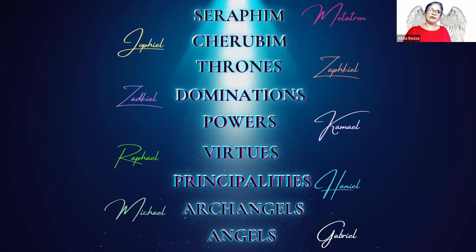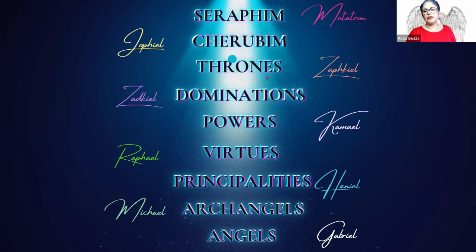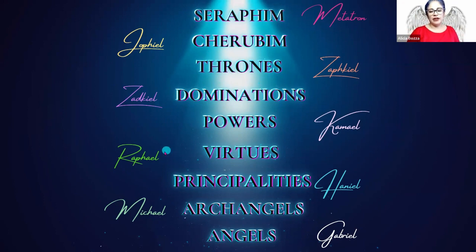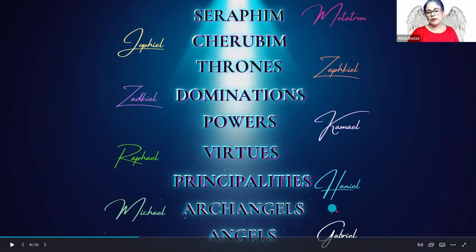These are the different choirs of angels. We have the Seraphim ruled by Metatron, the Cherubim ruled by Japhiel, the Thrones ruled by Zathkeel, the Dominations or Dominions also ruled by Zathkeel, the Powers ruled by Camael, the Virtues by Raphael, the Principalities by Haniel, the Archangels by Michael, and last but not least the Angel choir by Gabriel.